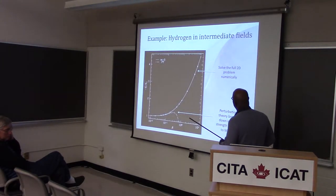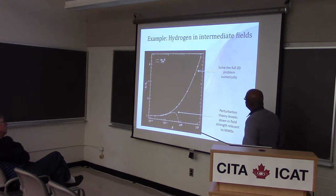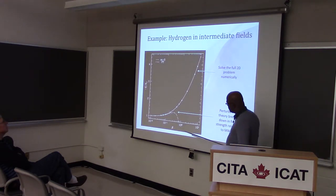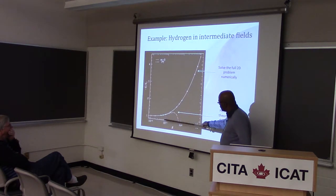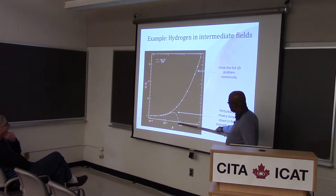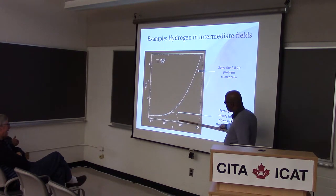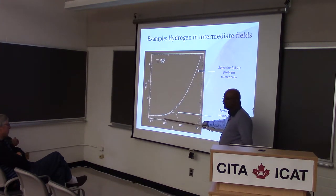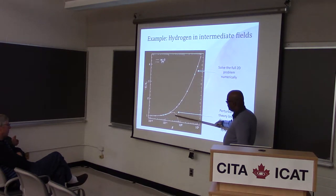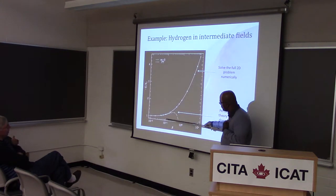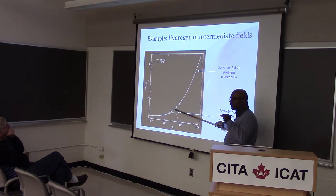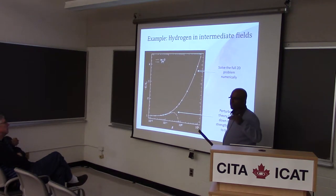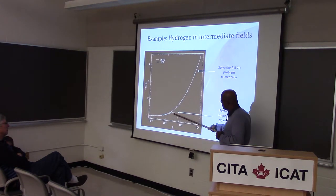To give an example, here's how the ground state energy of hydrogen evolves as we turn on the magnetic field. The dashed line is just perturbation theory, and it rapidly breaks down at around 10 to the 8 to 10 to the 9 gauss — field strengths relevant to the highest end of magnetized white dwarfs. So if you want to get energy levels or transition data, you probably can't do perturbation theory. You have to do a full numerical treatment.